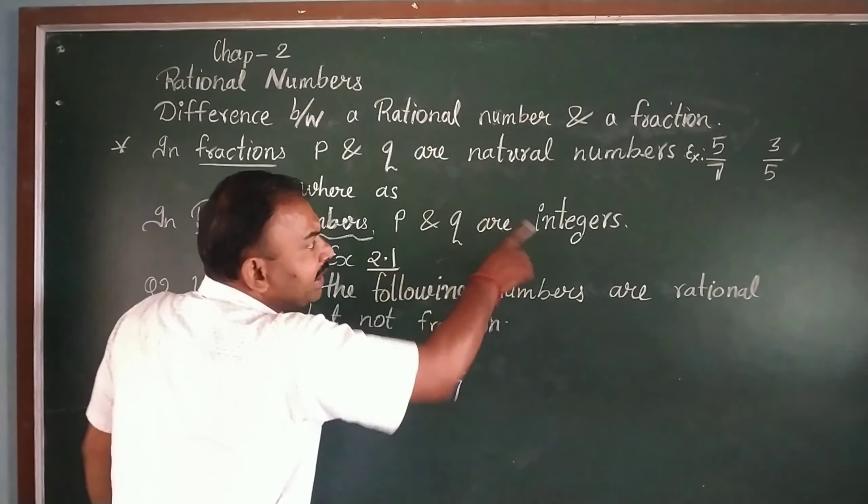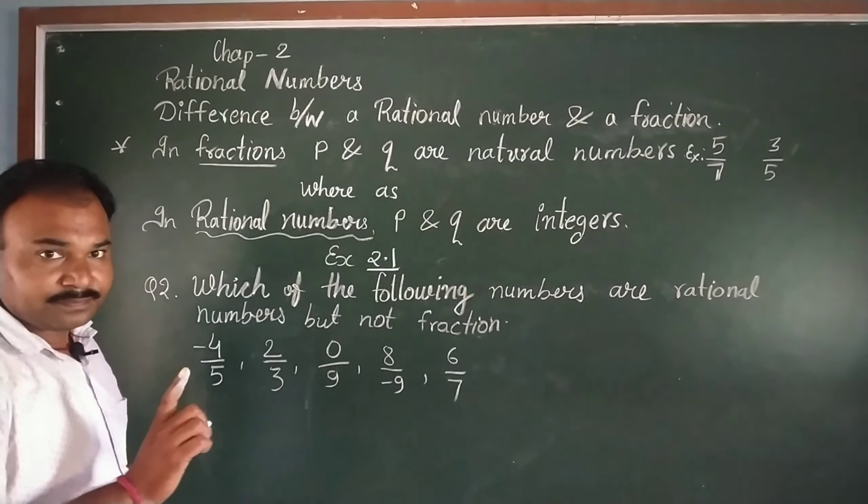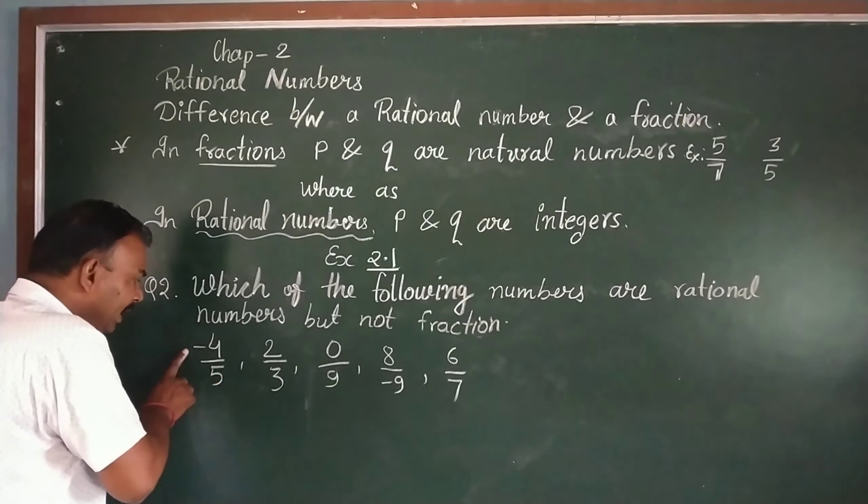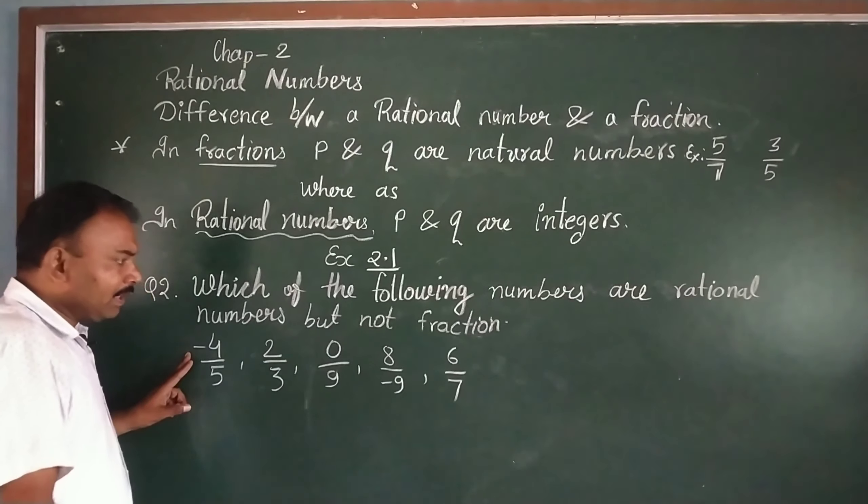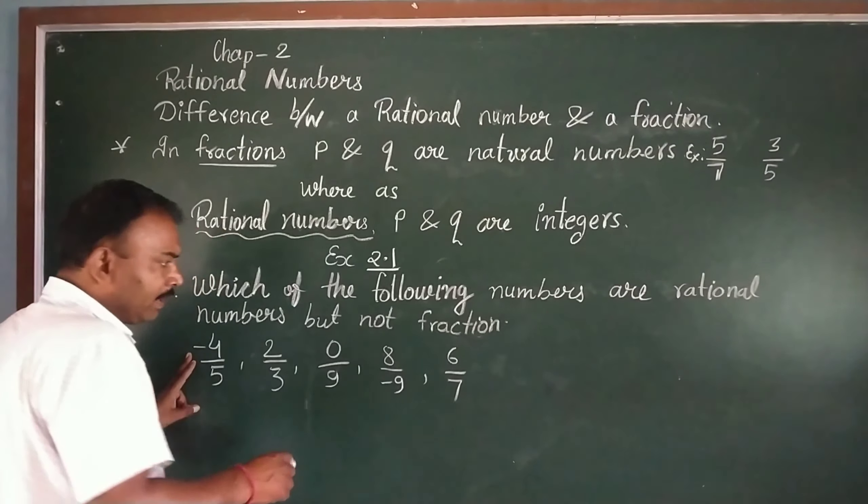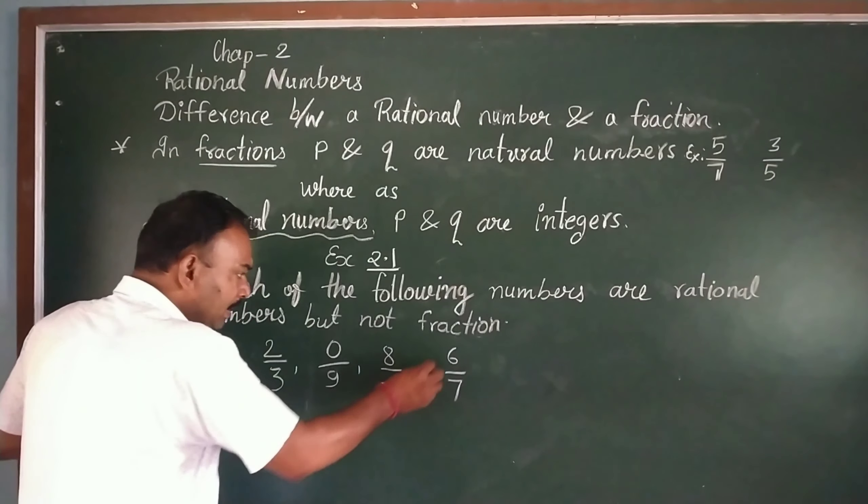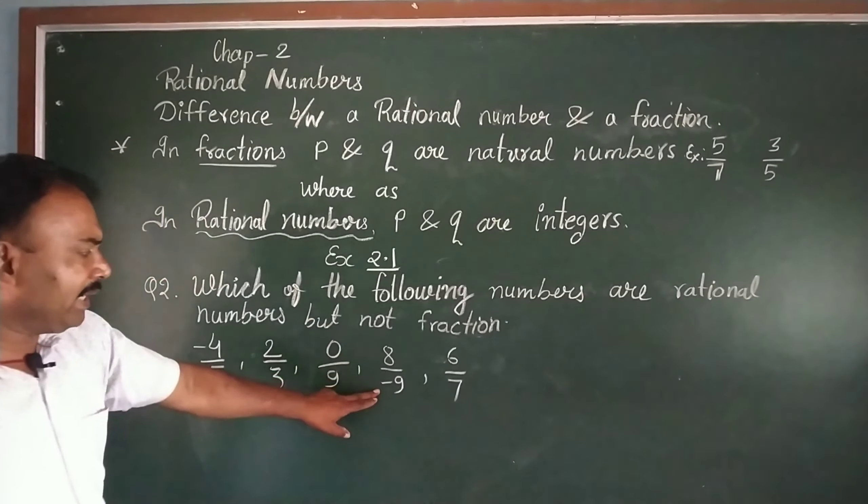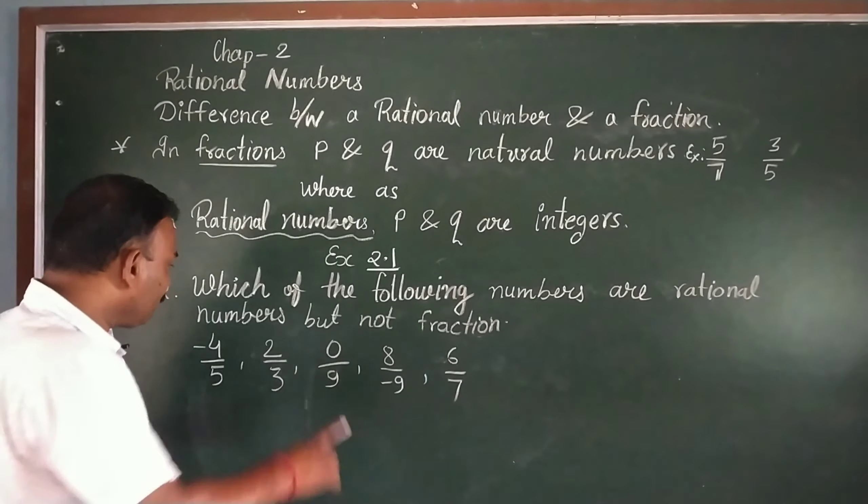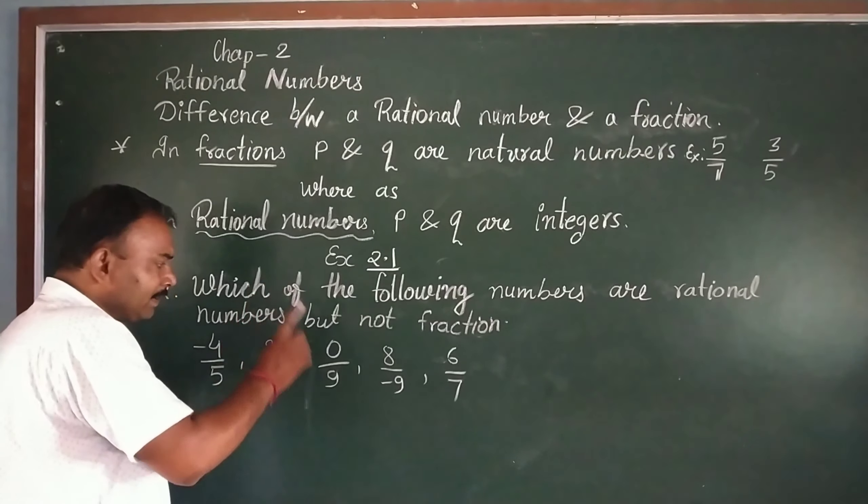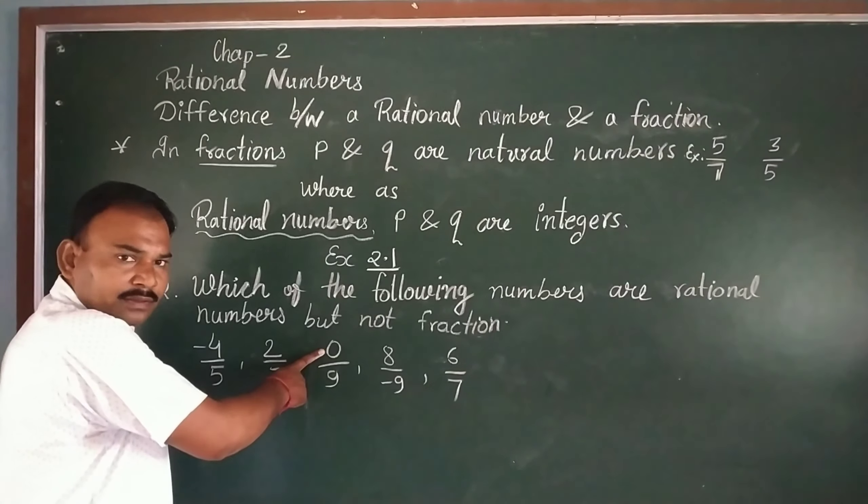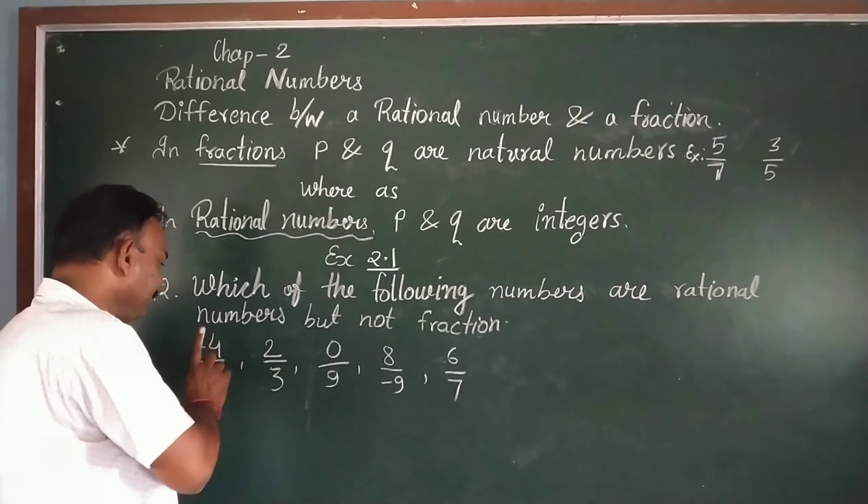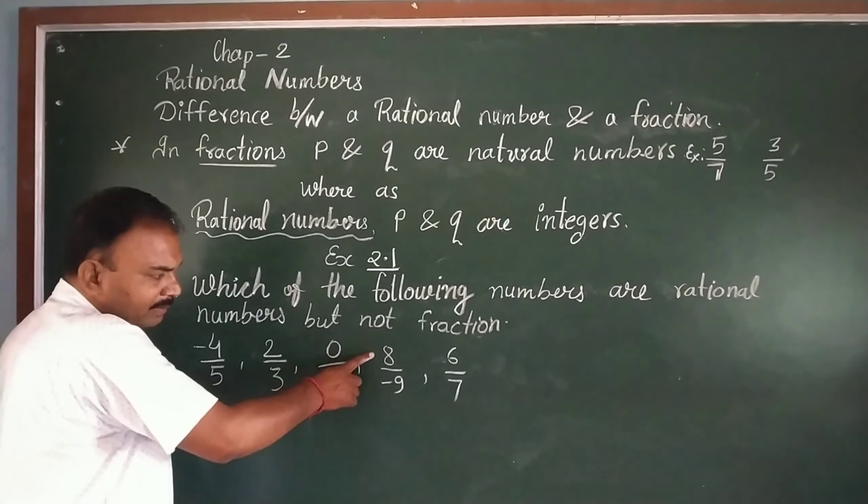Now if we talk about rational numbers, here we have P and Q are integers. So here we have minus 4 upon 5. Here we have minus 6 upon 7. Here we have 8 upon minus 9. It is an integer. Here we have 0 upon 9. It is an integer as well as a whole number. 9 also comes, 4 also comes, 5 also comes, 8 also comes, and minus 9 comes.